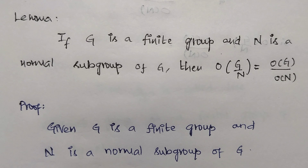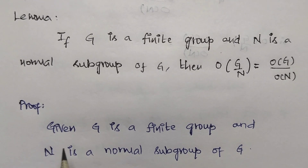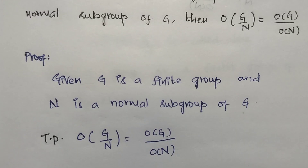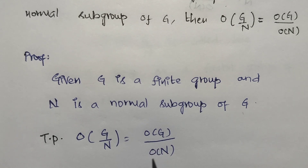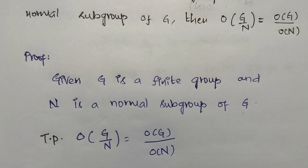Next theorem: if G is a finite group and N is a normal subgroup of G, then the order of G/N equals the order of G divided by the order of N. That is, |G/N| = |G| / |N|. We will now prove this.